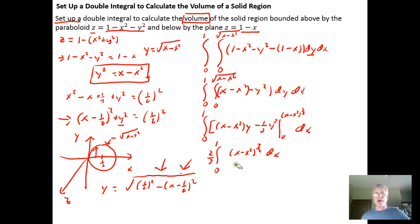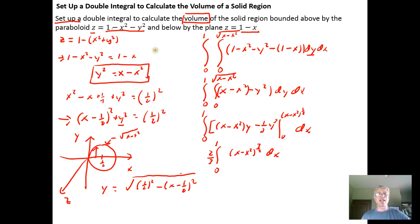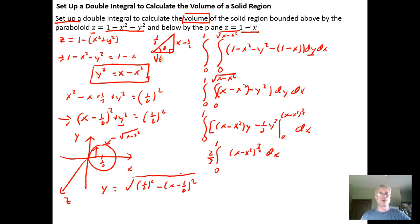This requires a trigonometric substitution. The completing-the-square form — the square root of (1/2) squared minus (x minus 1/2) squared — is more useful here. Setting up the right triangle with theta: the hypotenuse is 1/2, one leg is (x minus 1/2), and the other leg is the square root of (1/2) squared minus (x minus 1/2) squared, which equals the square root of (x minus x squared). They are the same expression.